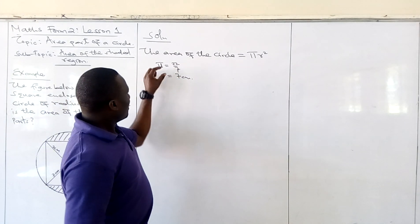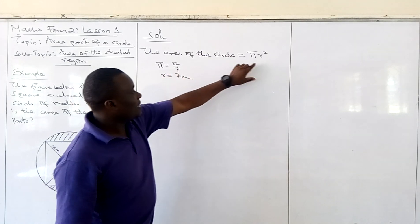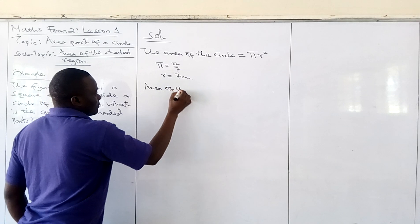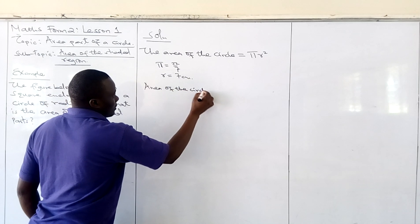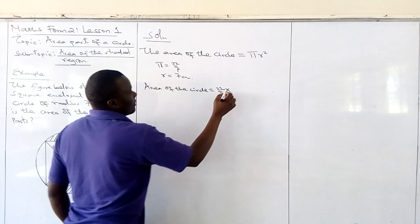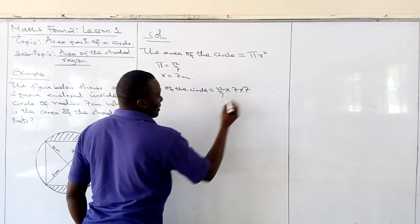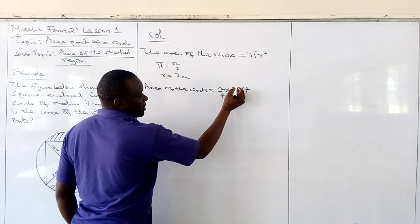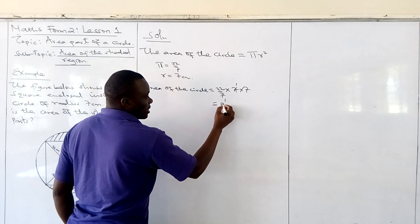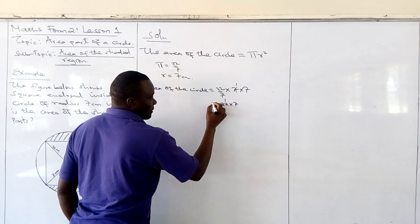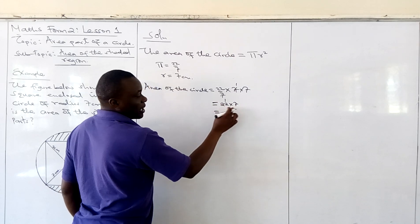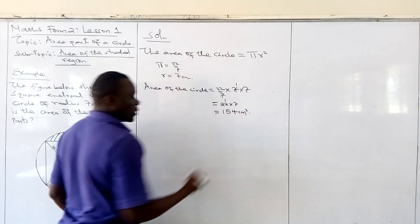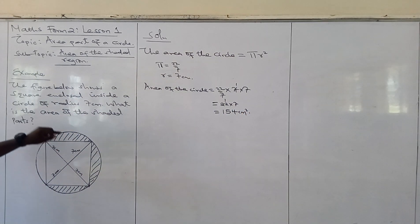Substituting pi and the radius into this formula, we will obtain our area. The area of the circle is equal to 22 over 7 times 7 times 7. Seven goes into 7 once, and 7 goes into 7 once, so we remain with 22 times 7. 22 times 7 gives us 154 cm squared. So that is the area of the circle.